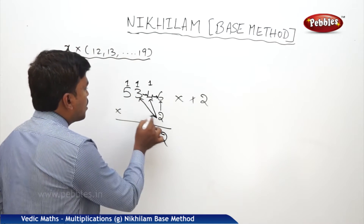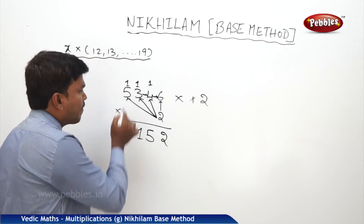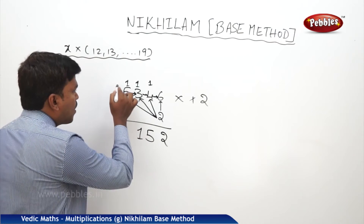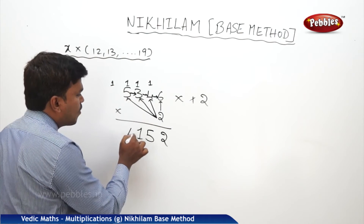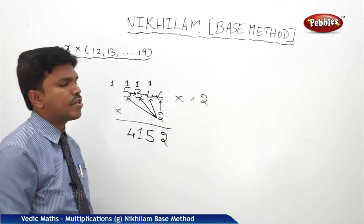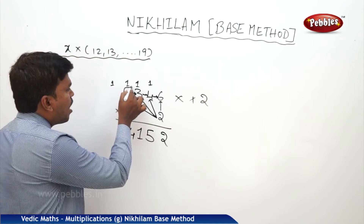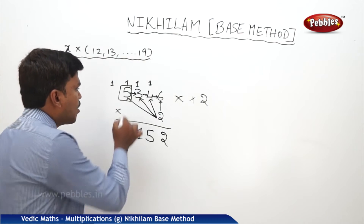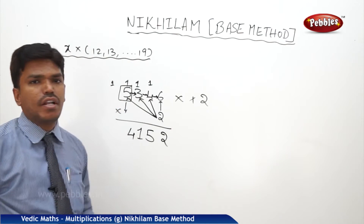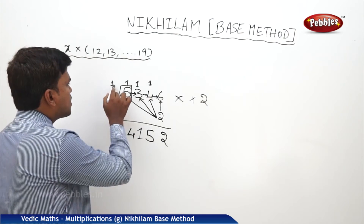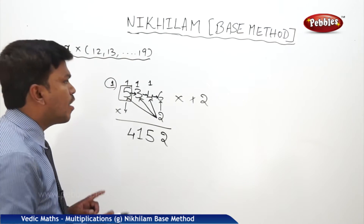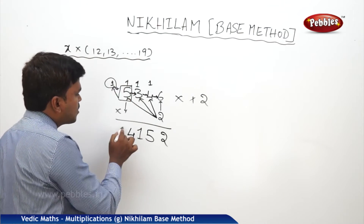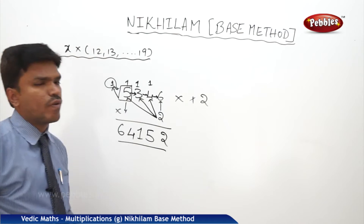Similarly: 2 times 5 is 10, plus carry 1 is 11. Add immediate right digit 3: 11 plus 3 is 14 — carry 1, drop 4. Last step: drop the leftmost digit of the number as it is, but first check for carry. There is a carry of 1, so 5 plus 1 is 6. So my answer is 64152.